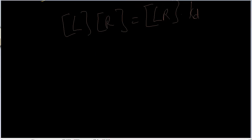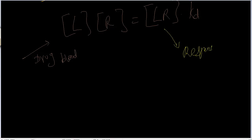The ligand is your drug, measurable as drug concentration in a blood or plasma sample. LR is the ligand-receptor complex, which you can measure by measuring the response — graded or quantal. But what about the free receptors R? Is there any way to measure all the receptors? It's difficult, so let's find an alternate way to replace receptors in the equation.